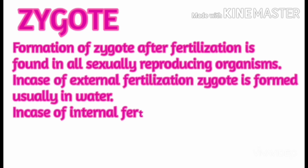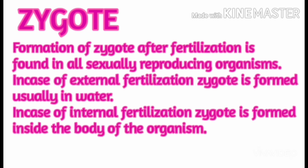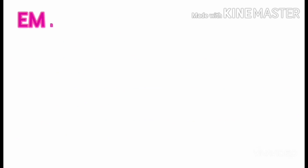Formation of a zygote after fertilization is found in all sexually reproducing organisms. In case of external fertilization, the zygote is formed usually in water. In case of internal fertilization, the zygote is formed inside the body of the organism.